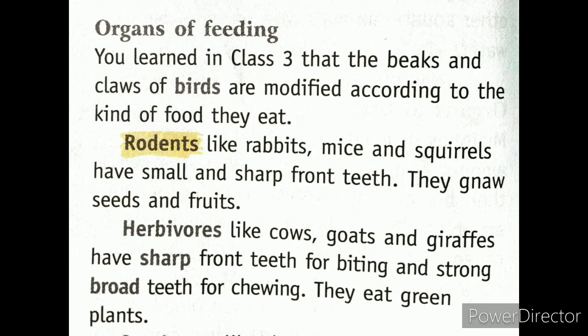That is why their mouth part is also suitable for the food they eat - depending on what kind of food they consume, their mouth part will develop accordingly. Now we will understand the organs of feeding. As explained previously, birds have beaks and claws which are modified structures that help them consume food.